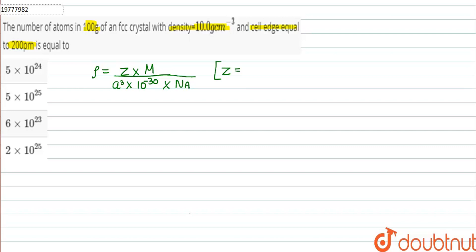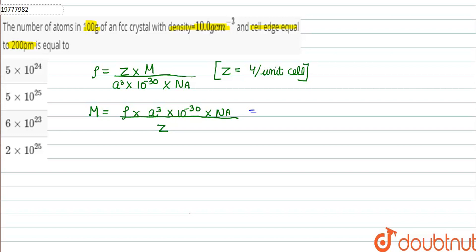Z will be 4 atoms per unit cell, since we have an FCC — face-centered cubic structure. So, we will solve this for molar mass. We get rho into a cubed into 10 raised to the power minus 30, into NA, upon z. Now let's put in the values: density is 10, into 200 cubed, into 10 raised to the power minus 30.